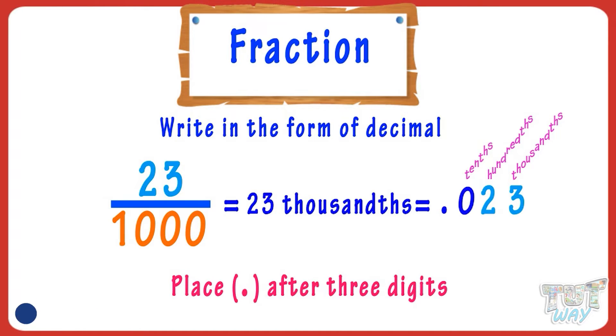So place a zero to the right of the number. Now we can place the decimal after three digits from the left: 0.023. So our decimal number for 23 thousandths is 0.023.